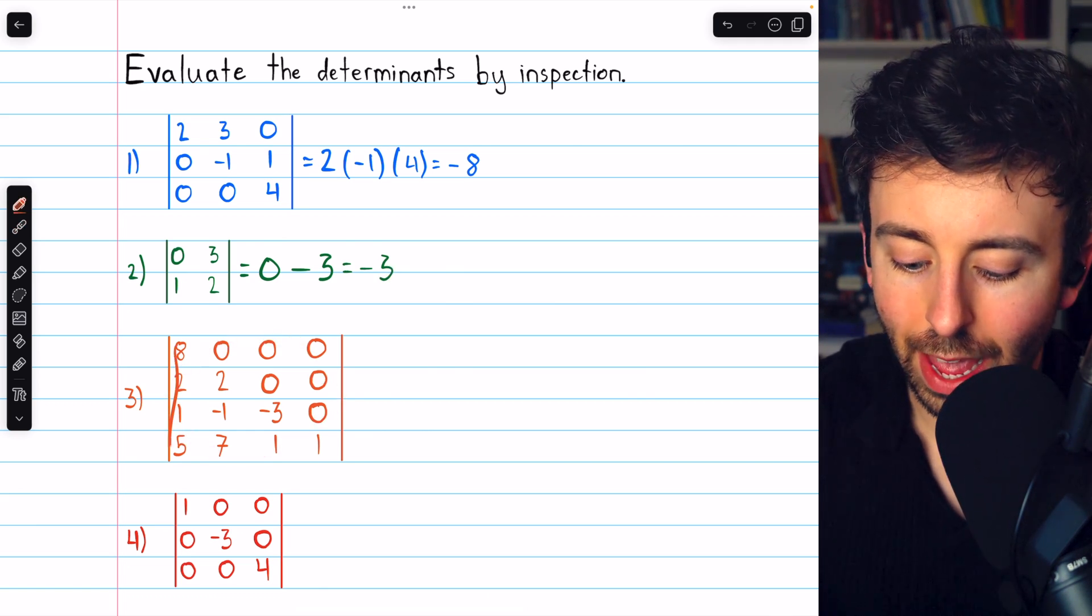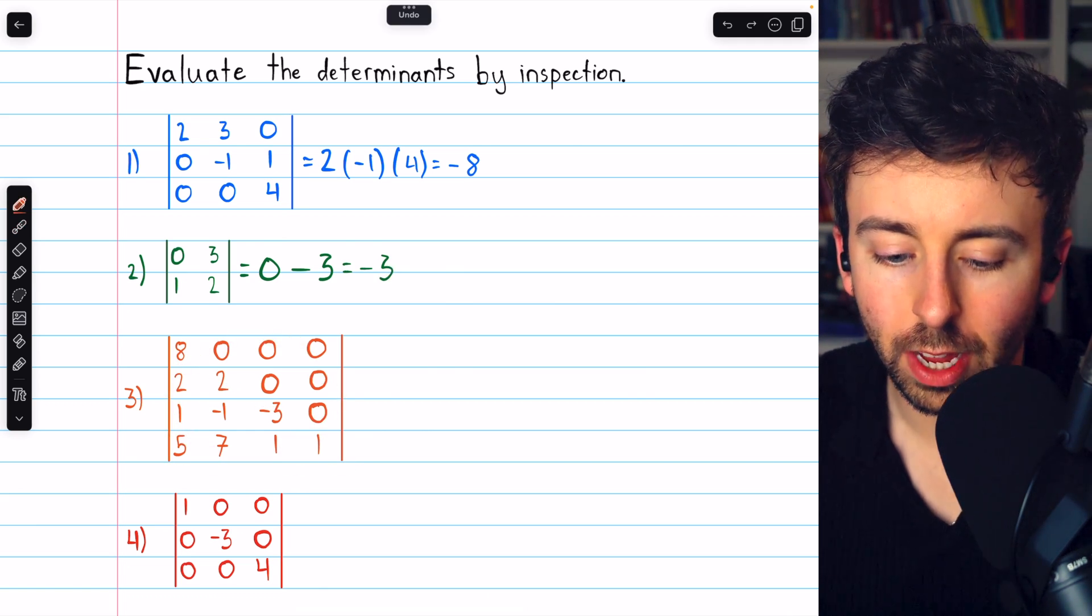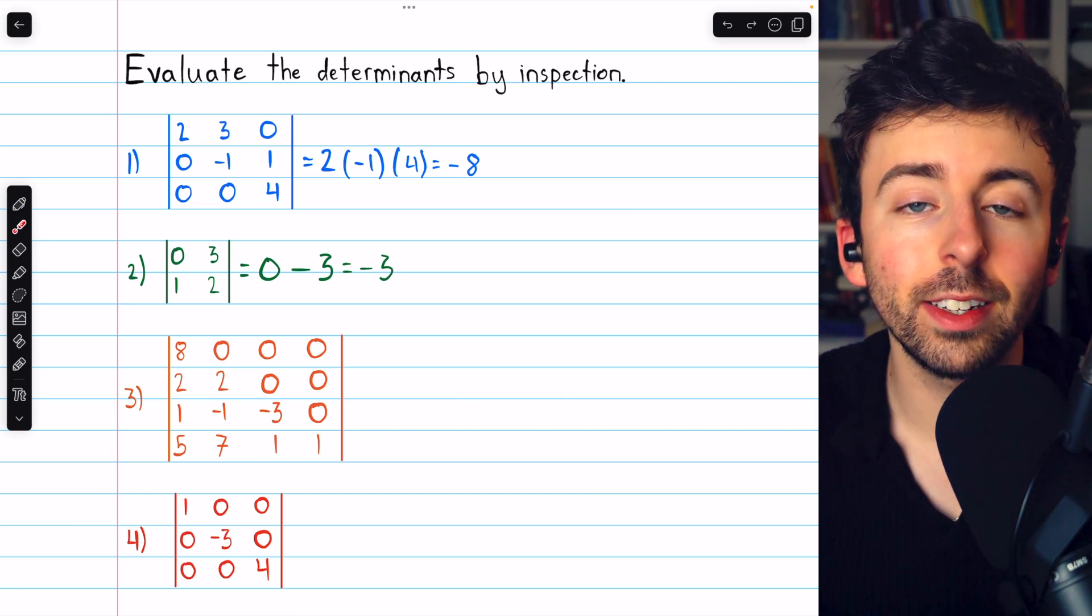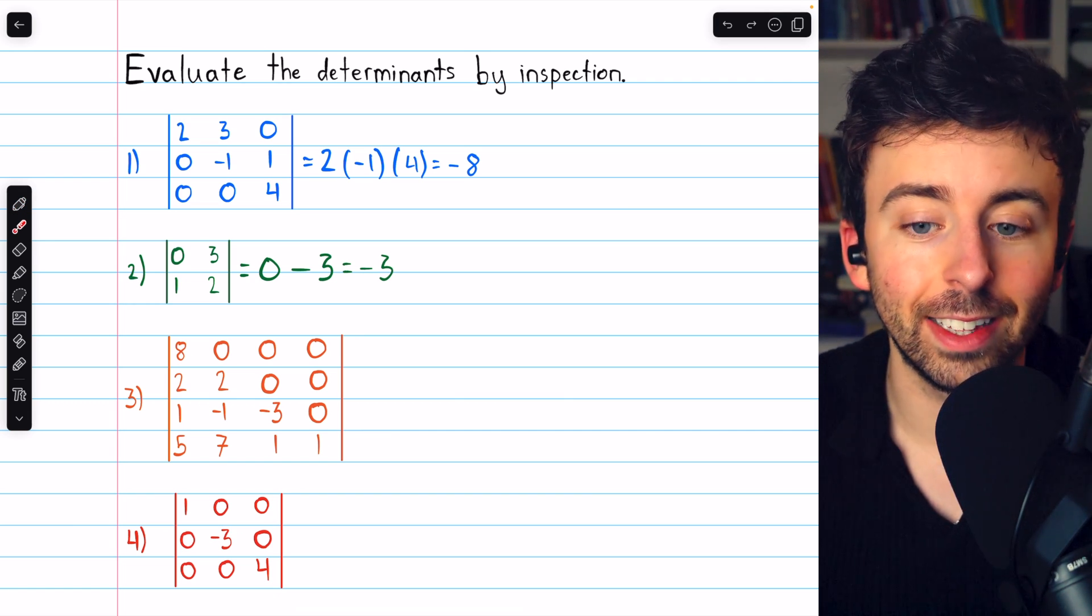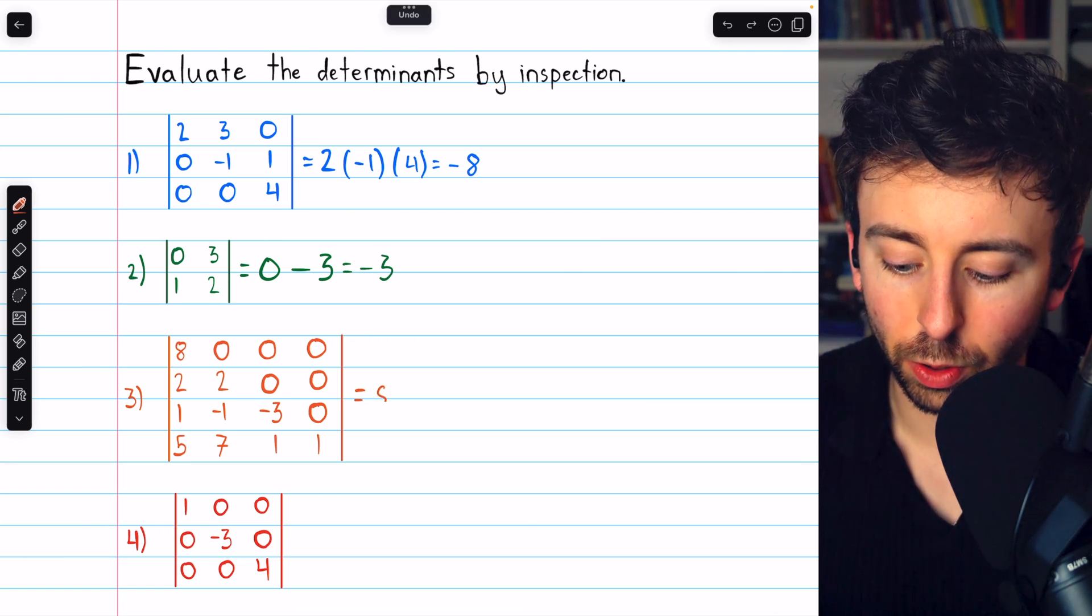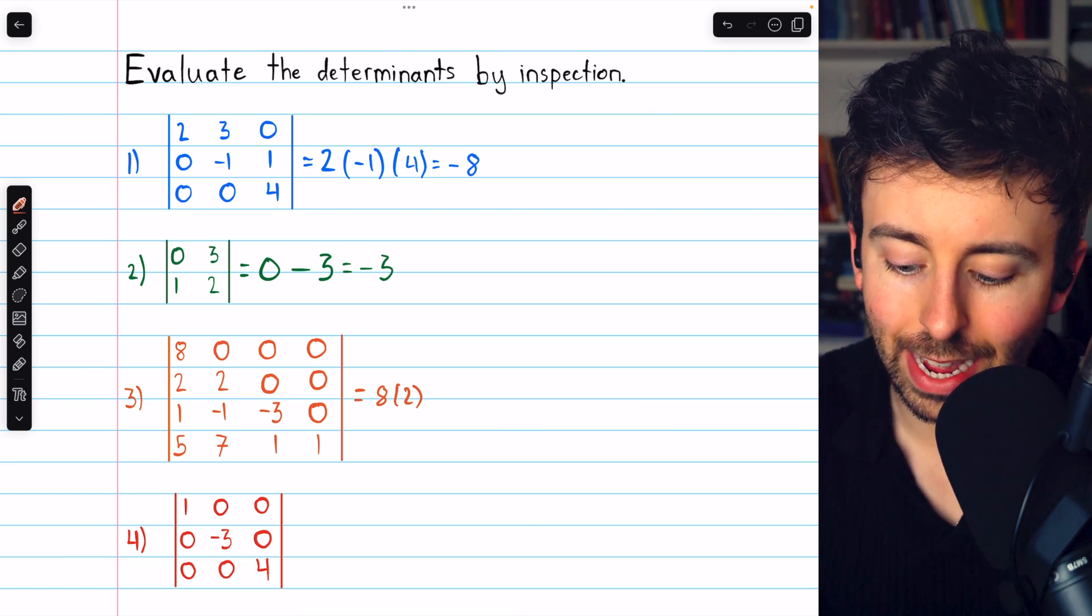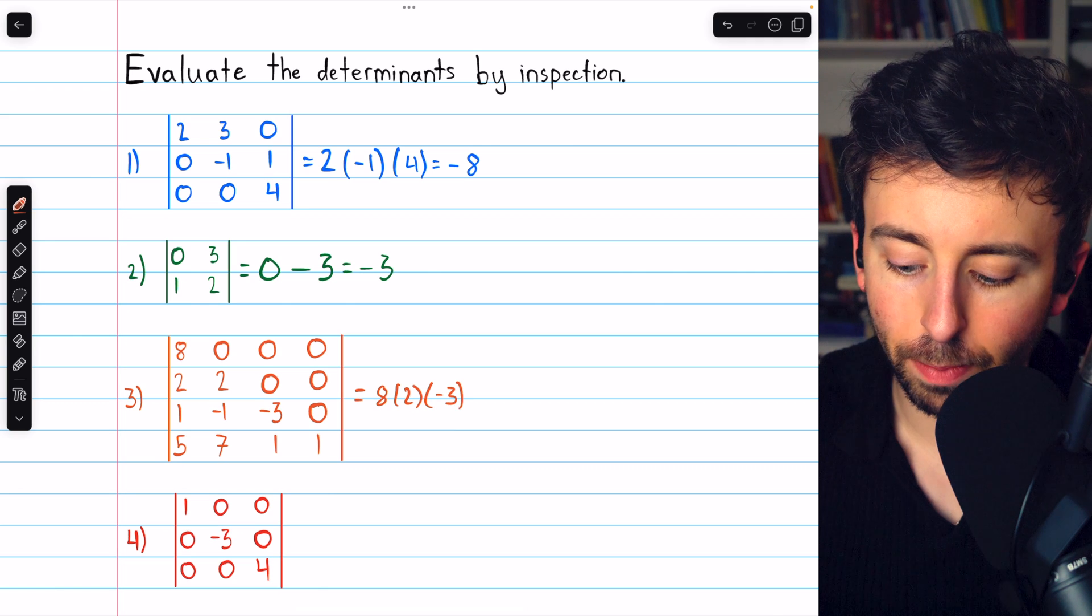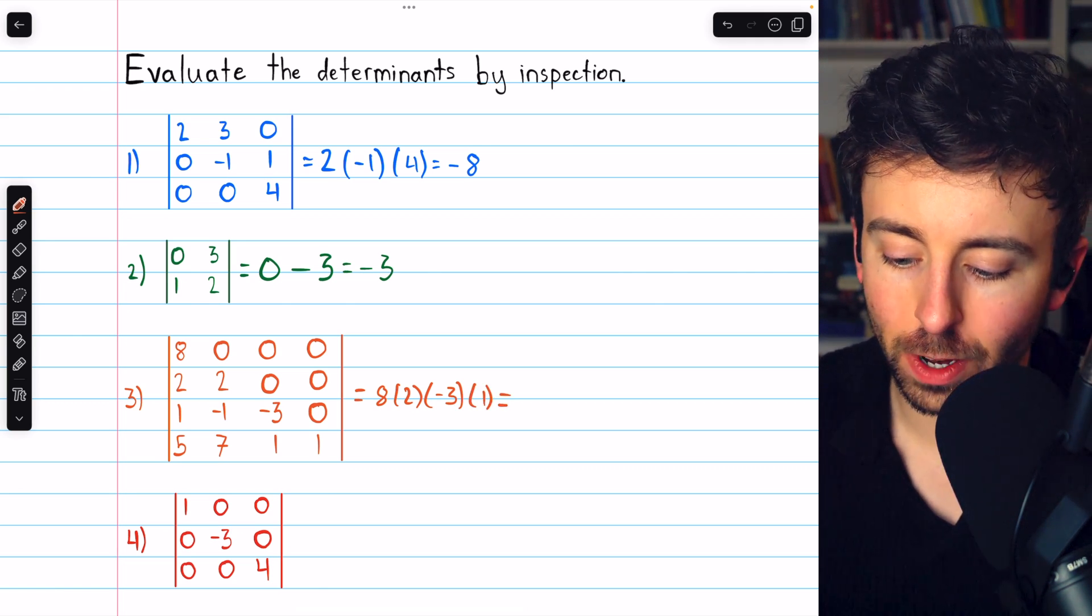In this third example, we have a lower triangular matrix, but again, its determinant is just going to be the product along its diagonal. So 8 multiplied by 2 multiplied by negative 3 multiplied by 1, the product of the diagonal entries.